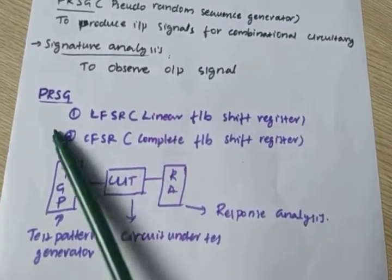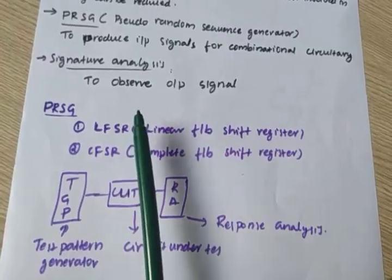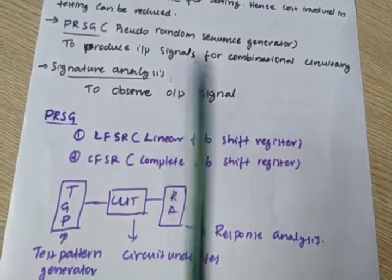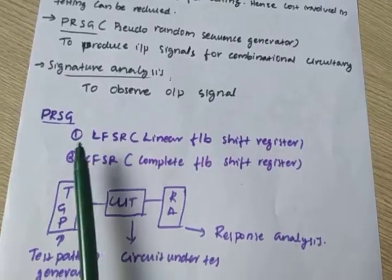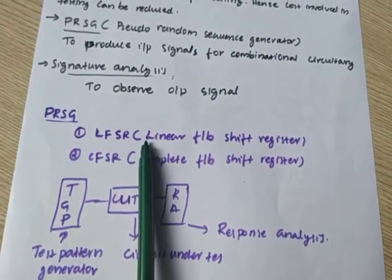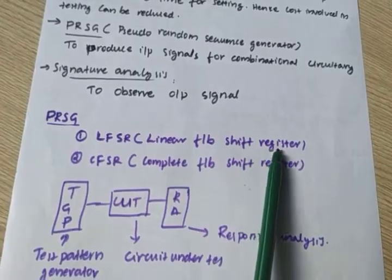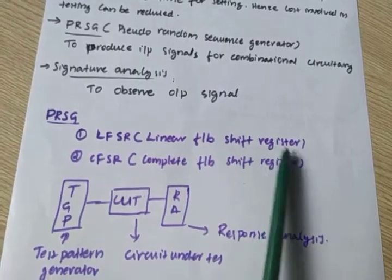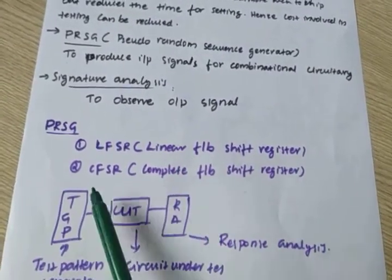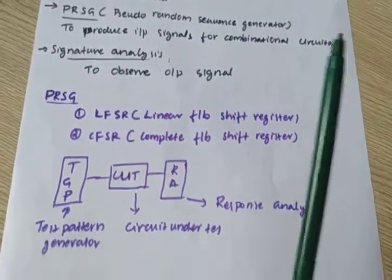PRSG is the testing done in BIST, and PRSG can be classified into LFSR and CFSR. LFSR is linear feedback shift register and CFSR is cellular feedback shift register. These are the two registers.